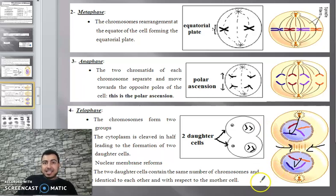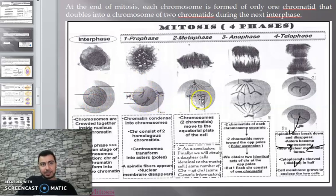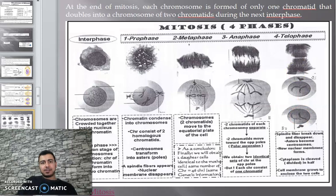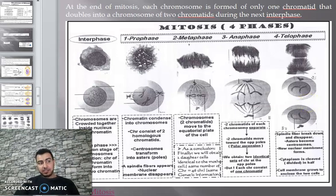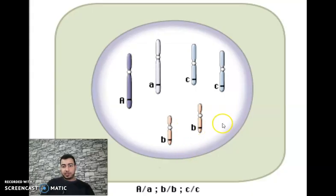The result is two daughter cells, each with 2n equal to 4 — two identical daughter cells. Now let's observe an animation describing mitosis. Mitosis conserves the genetic information — not only the chromosome number (46 in each cell) but also the same genetic information.